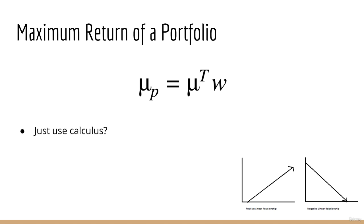To be clear, we're trying to find the maximum of mu transpose w with respect to w. That is, what value of w will maximize this function? However, this doesn't work. Why?